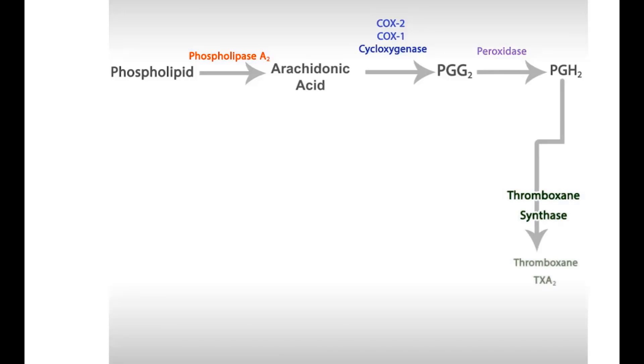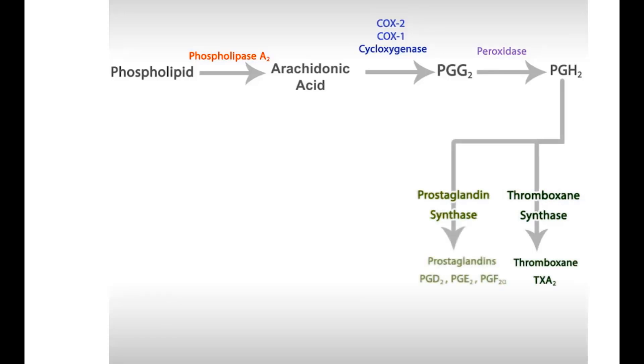PGH2 is a direct precursor of all prostanoids, such as thromboxane, prostaglandins, and prostacycline.